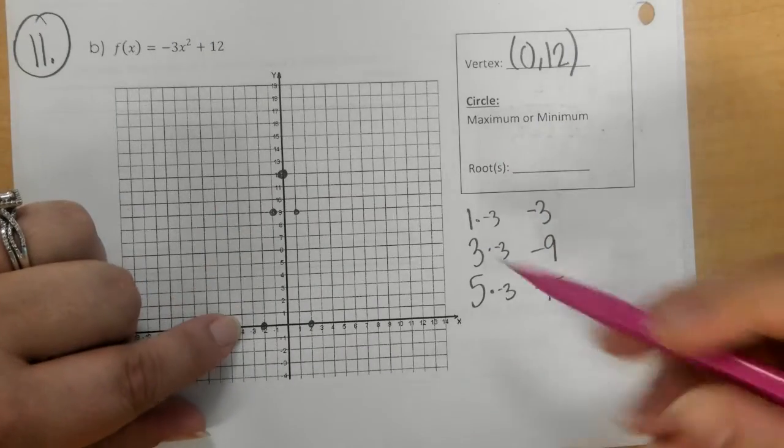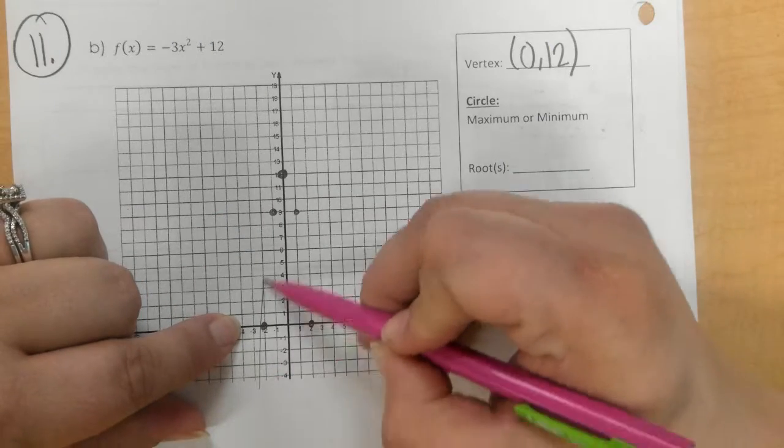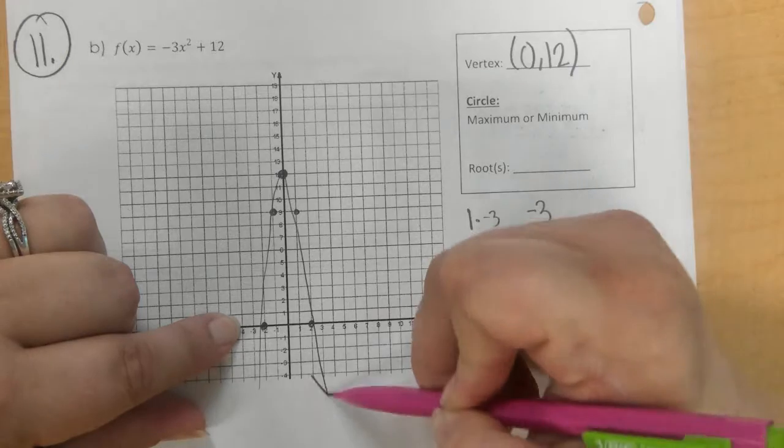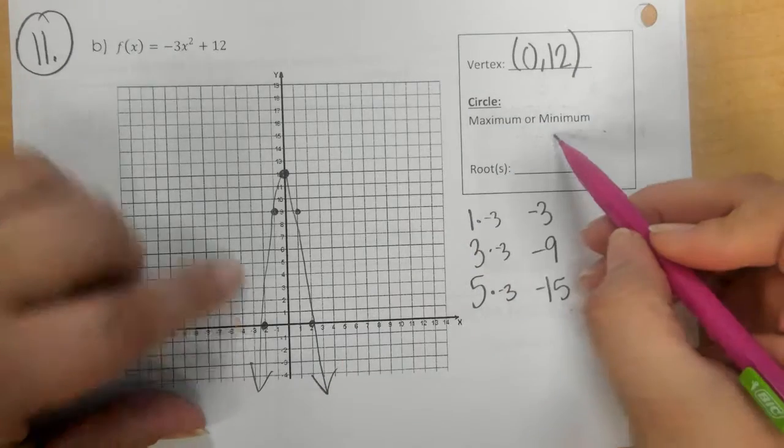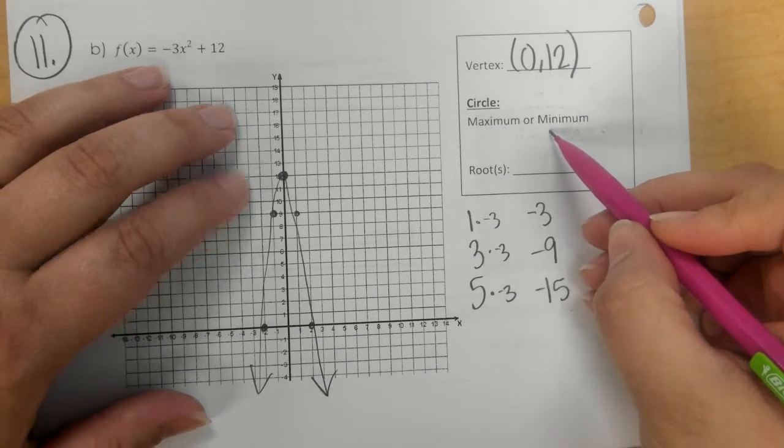And we obviously can't fit 15 on here. So we draw our U shape and ask if it's a max or a min. And in this case, it's the highest point, so it's a maximum.